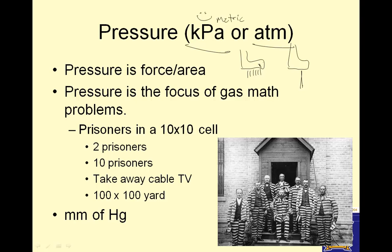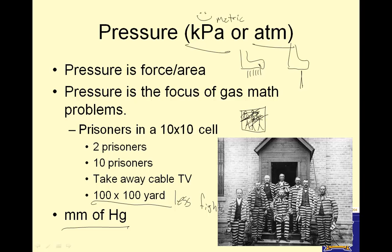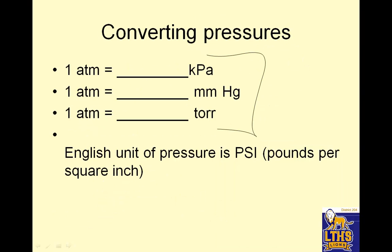Think of prisoners in a ten-by-ten cell. If you put two prisoners in there, they're close and they fight. Put ten prisoners in there, there are more fights. Put them in a bigger yard — a hundred-by-hundred yard — and there are fewer fights. Another unit of pressure is millimeters of mercury. One atmosphere equals 101.3 kilopascals, 760 millimeters of mercury, and 760 torr. The English unit is psi — pounds per square inch — but we'll never use it.